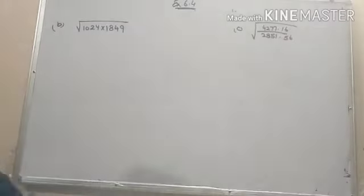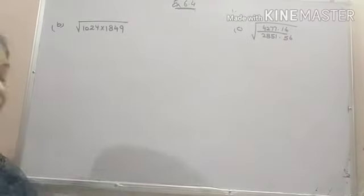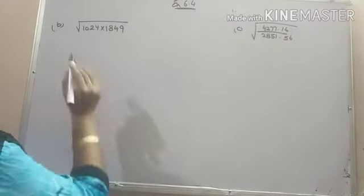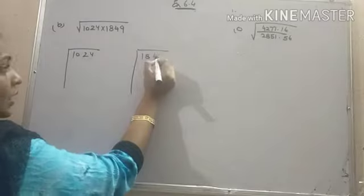Say in the B and C part, in B part there is no decimal term. So the only way to solve this is to find the square root of these two numbers separately and then do the multiplication.